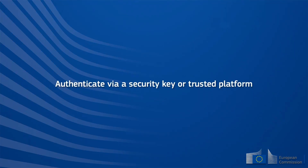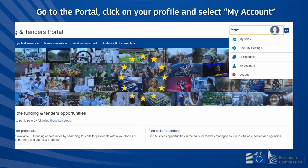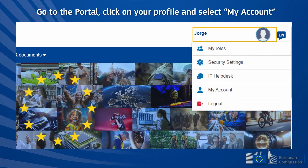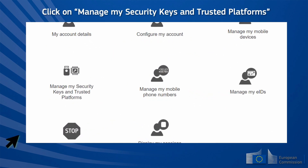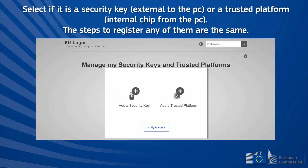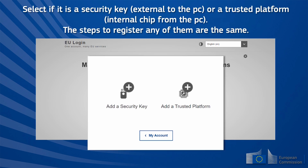To authenticate via a security key or trusted platform, go to the portal, click on your profile, and select 'My Account'. Click on 'Manage My Security Keys and Trusted Platforms'. Then select whether it is a security key external to the PC or a trusted platform, which is an internal chip from the PC.